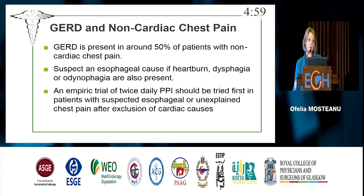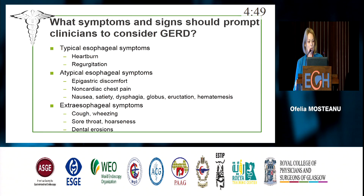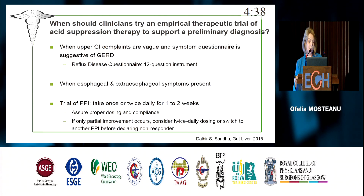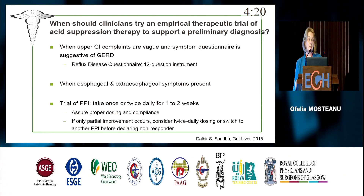There are typical symptoms which might raise the suspicion of GERD, and you might try some empirical trials of PPIs, as will be shown in the next talk. Besides typical symptoms, we have atypical esophageal symptoms and extra-esophageal symptoms where you have to look for other organ diseases. Keep in mind that 50% of patients without GERD will experience improvement after PPIs, and 70% of GERD patients will improve after PPIs. So it's not always easy to differentiate between them.